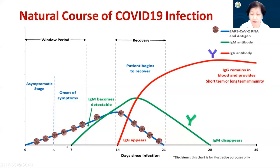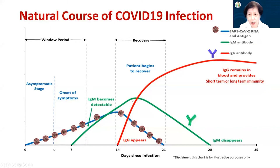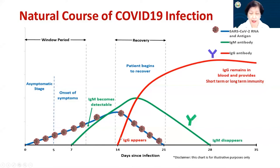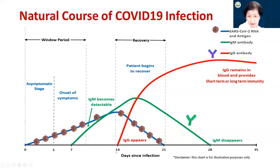Shortly after, around day five to day six, depending on the detection limit and sensitivity of your test, you may start to detect IgM antibody. IgM antibodies are acute or recent phase response antibodies. The IgM antibodies depicted in green would go up for about two weeks, then slowly decline. After four to five weeks — we still do not know for certain — but this is the general trend we see right now.